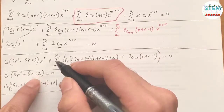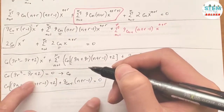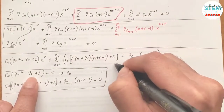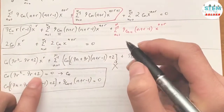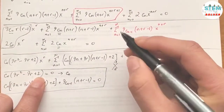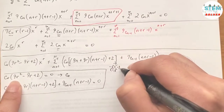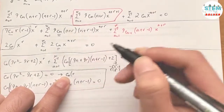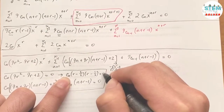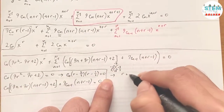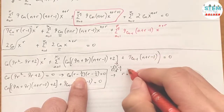Now we solve for r using the indicial equation. I rewrite 9r² − 9r + 2 in factored form using the diamond method: two numbers that add to −9 and multiply to 18 are −6 and −3. Dividing by the leading coefficient gives (r − 2/3)(r − 1/3) = 0, so r = 2/3 and r = 1/3.